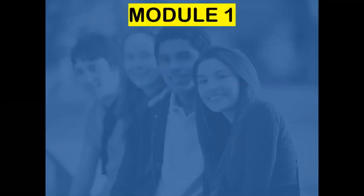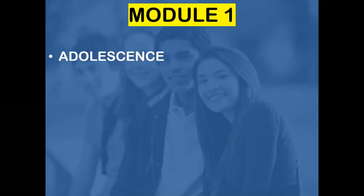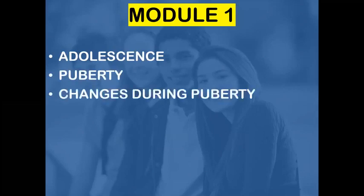In this chapter called Reaching the Age of Adolescence, in Module 1, we will learn and discuss adolescence. We will come to know what is puberty and the various changes that happen during the stage of puberty.